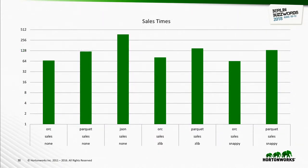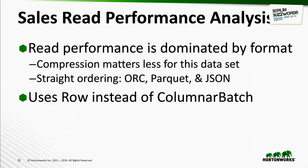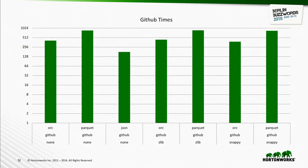For sales, we got a different picture. ORC did really well, partly because it's smaller and partly because the data is better suited for what ORC is fast at. Parquet is a little bit slower, and JSON is still the slowpoke. The read performance is dominated by the format — it makes the most difference which format you've encoded in, less about the particular compression picked.